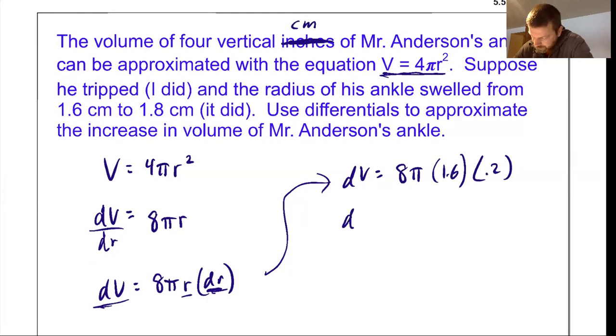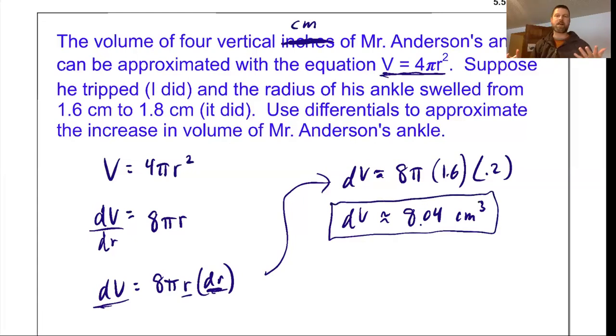In this case, the change of volume is approximately, again, it can only be approximate because it's a small change. Let's see here. 8 times 0.2 times 1.6 times π. 8.04 cubic centimeters. So my ankle swelled by approximately 8 cubic centimeters. It was a pretty bad sprain.